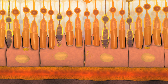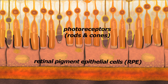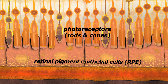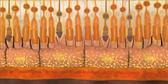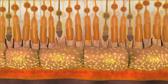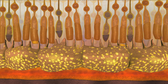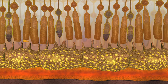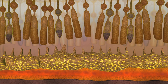In Stargardt disease, a defective protein in photoreceptors results in the accumulation of lipofusin in retinal pigment epithelial, or RPE, cells as photoreceptors are shed daily. Lipofusin is composed of material that is very toxic to RPE cells. The RPE cells become engorged with this toxic material and over time begin to shrink and die.